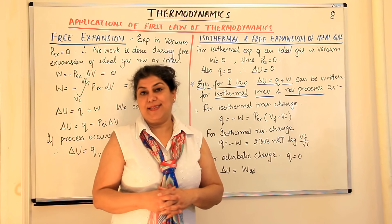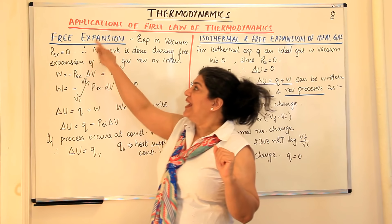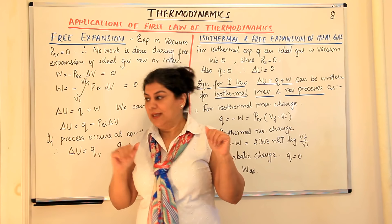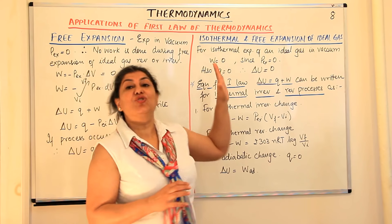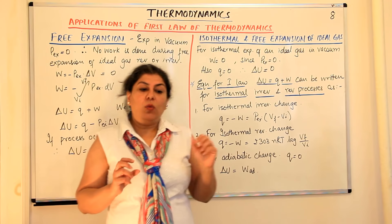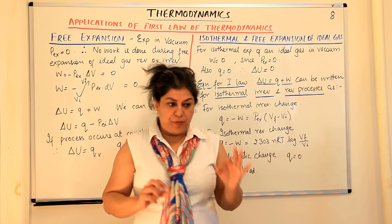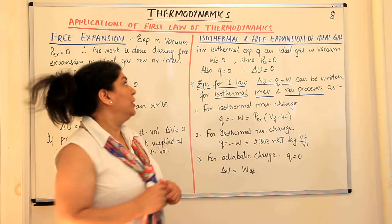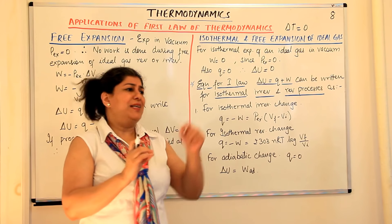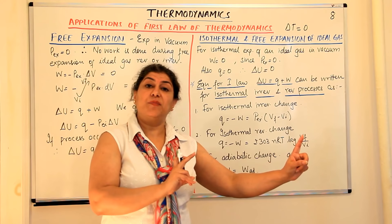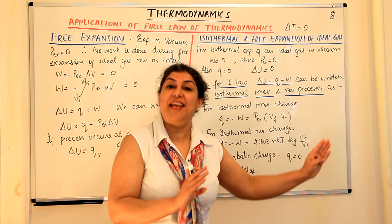The next type of expansion discussed is isothermal and free expansion. Let us first focus on the isothermal process. What is an isothermal process? A process in which the temperature does not change. So in an isothermal process, delta T equals zero — T2 minus T1 equals zero. During the change from state 1 to state 2, the temperature remained the same and did not change.